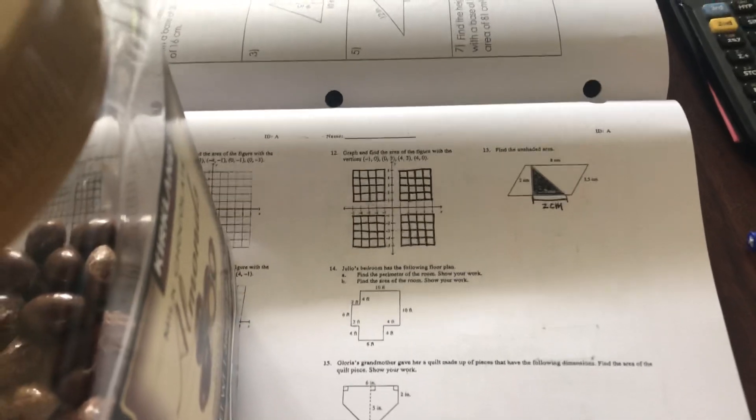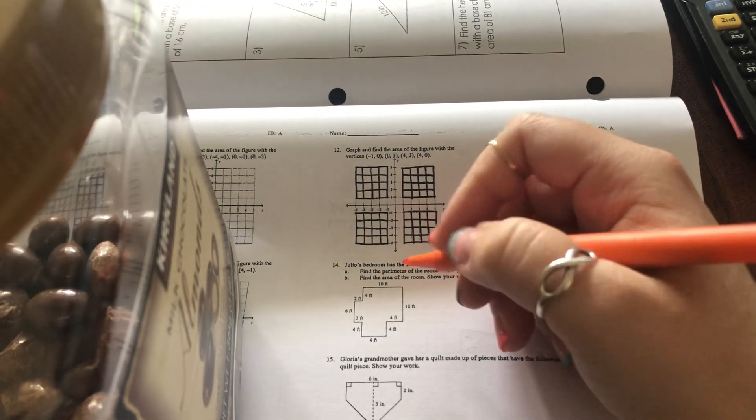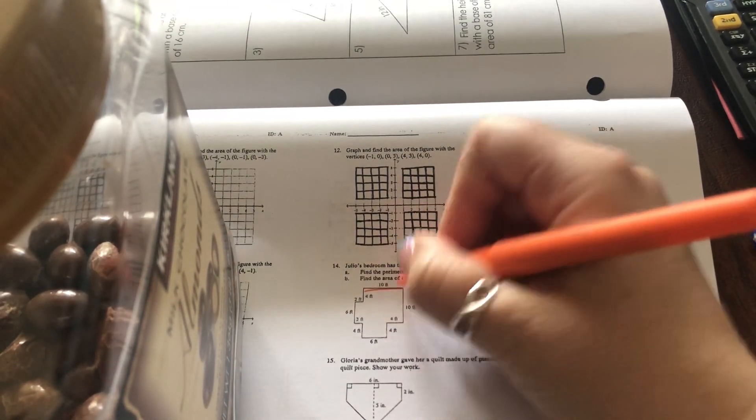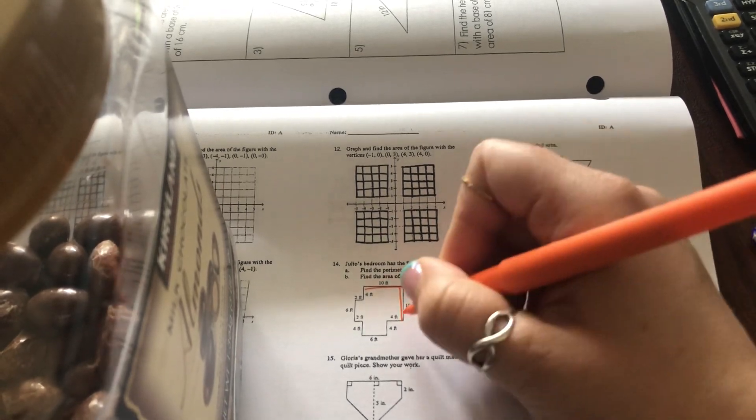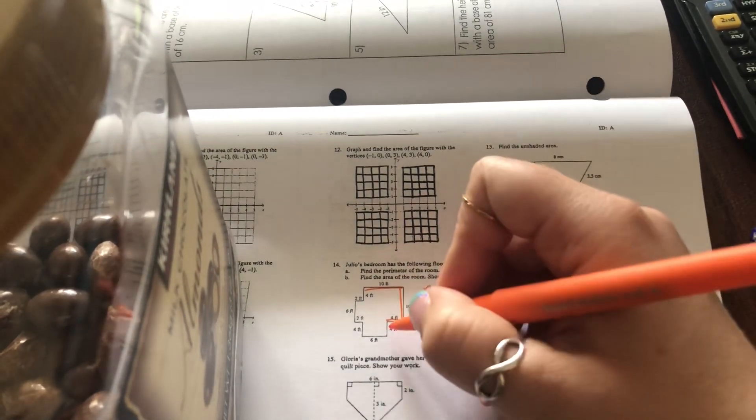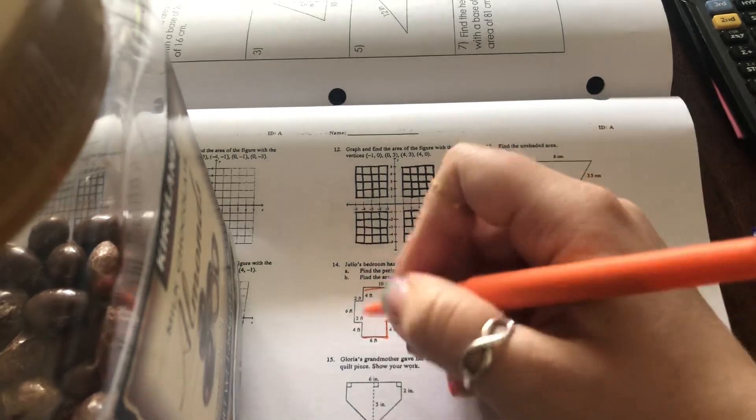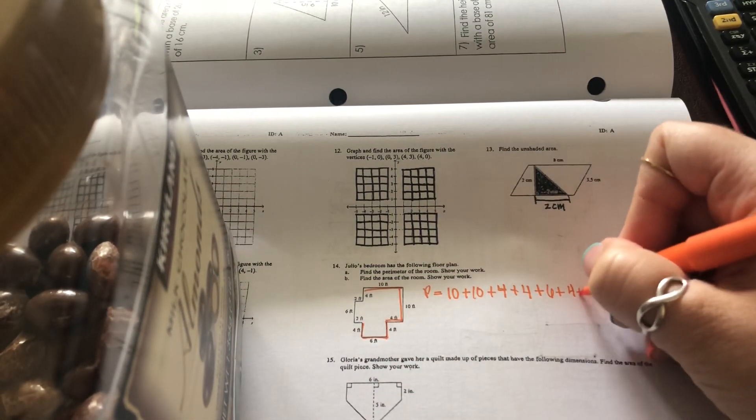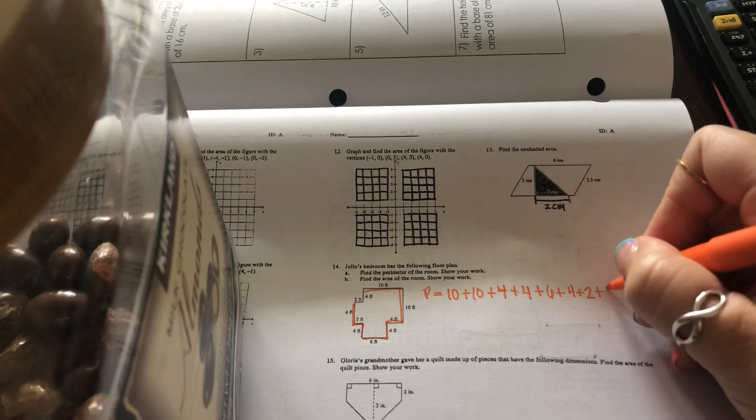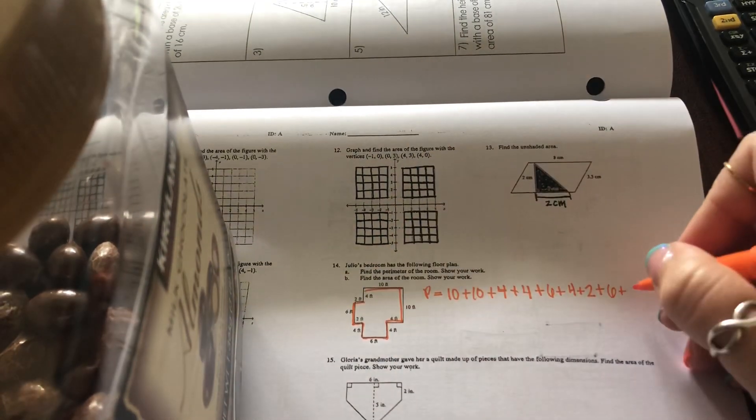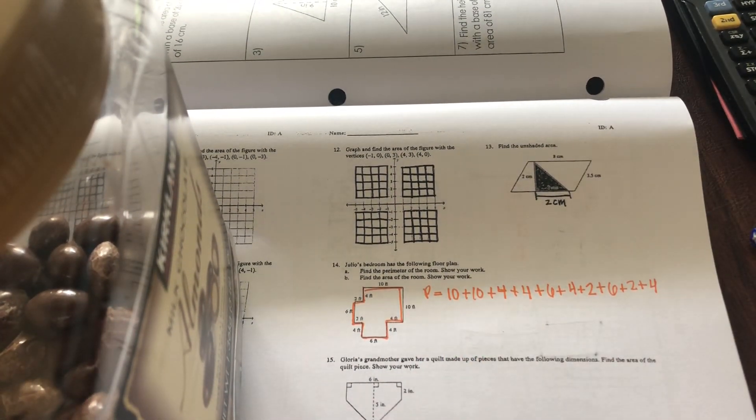For number 14, it says find the perimeter of this shape. Well, the perimeter is just along the outside. So you would say P equals 10. And I actually like trace it. So then I remember which ones I've done plus this other 10 plus that four plus that four. And also make sure you don't miss any sides plus that six plus that four plus that two plus that six plus that two plus that final four. Add them all together and your perimeter would be that many feet.